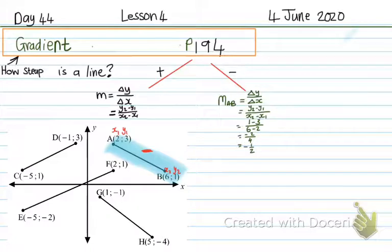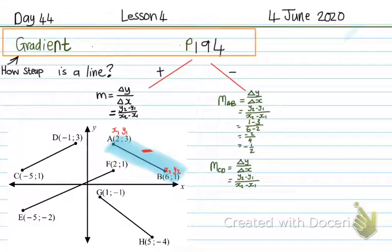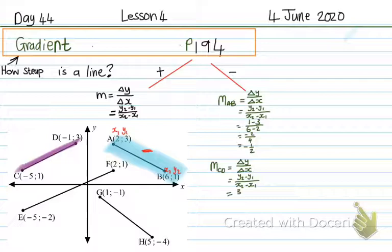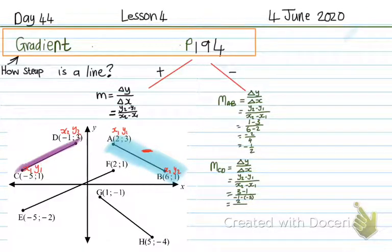Also, don't be afraid of fractions — many times you will get fractions. So then the gradient of CD: delta y over delta x is equal to y2 minus y1 over x2 minus x1. Going to CD and marking my coordinates: x1 y1, x2 y2. So it's y2 minus y1: that's 3 minus 1 over x2 minus x1, which is negative 1 minus negative 5. 3 minus 1 is 2 and negative 1 plus 5 is 4. 2 over 4 gives me a half — positive a half, which is correct because it is an uphill line.